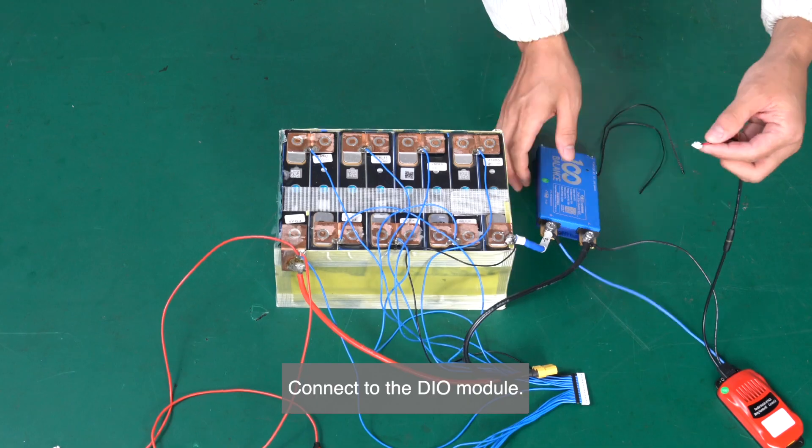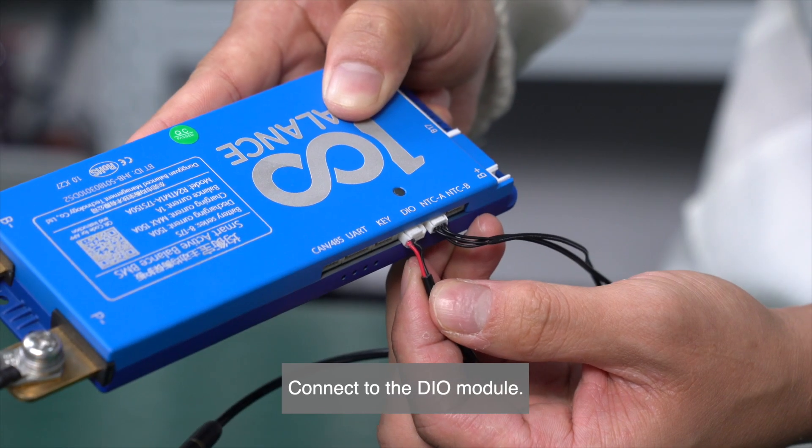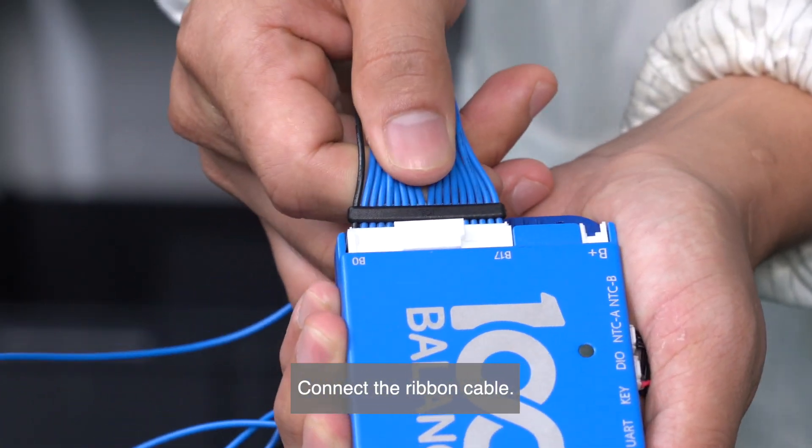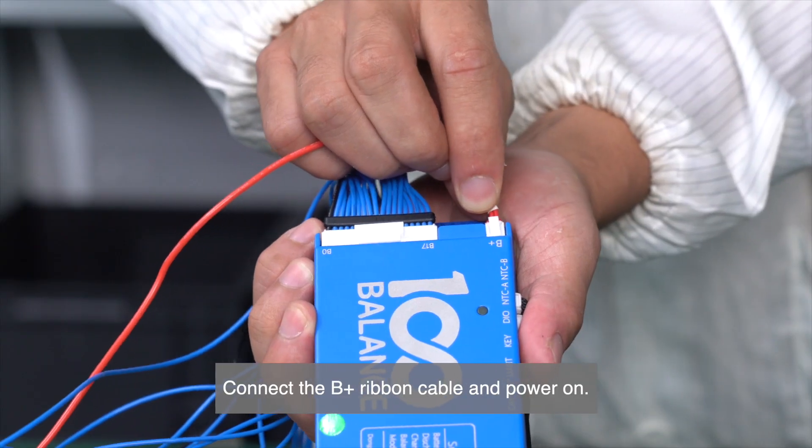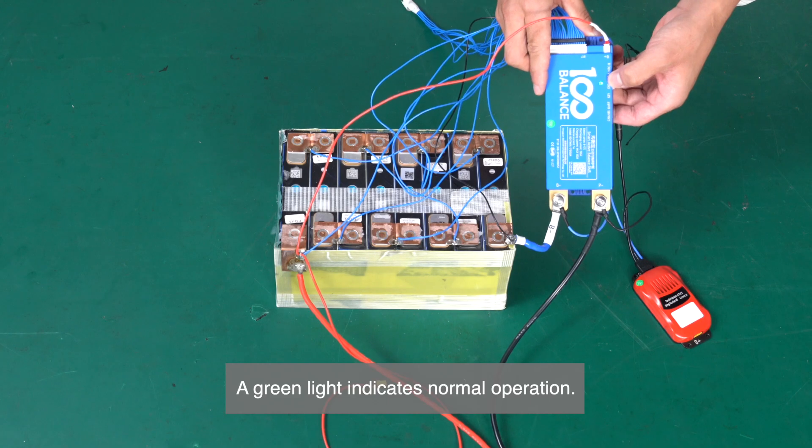Connect to the DIO module. Connect the ribbon cable. Connect the plus ribbon cable and power on. A green light indicates normal operation.